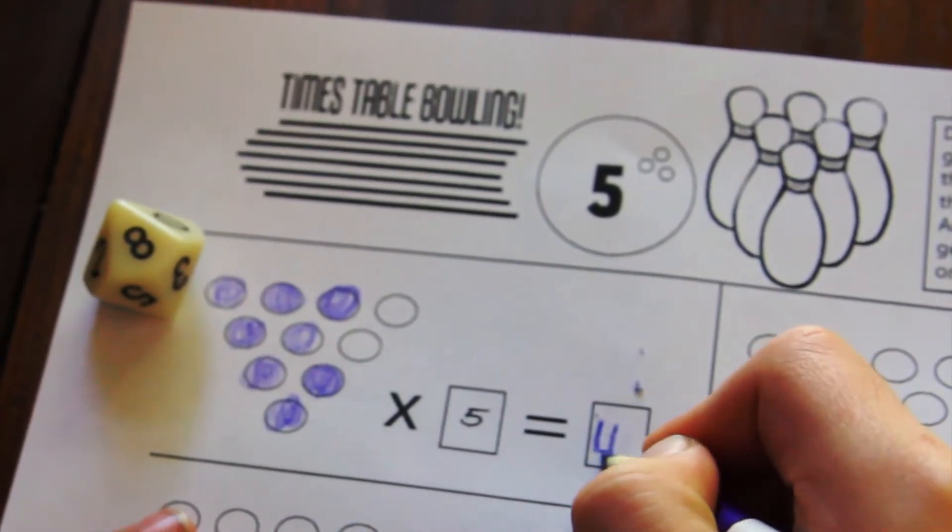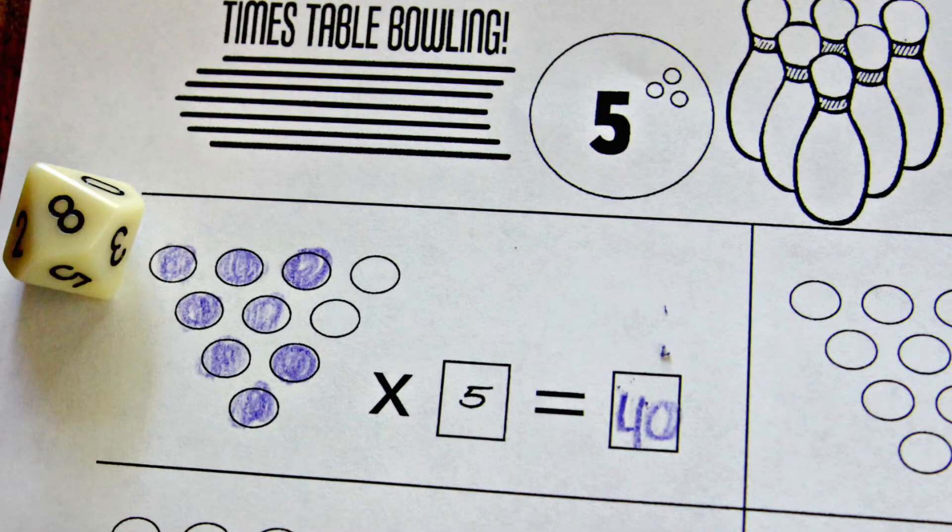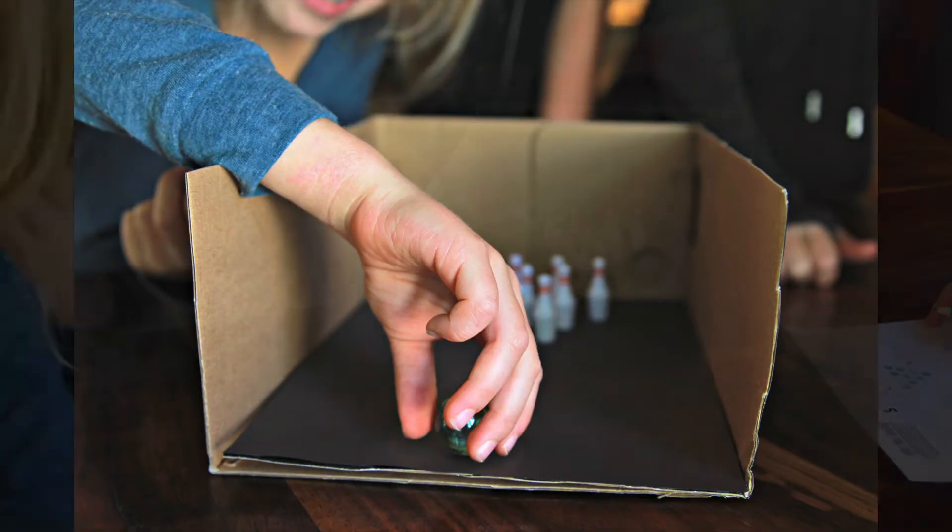Then multiply the number of pins knocked down by the number at the top of your worksheet. If you get a score of 10, every pin is knocked down.